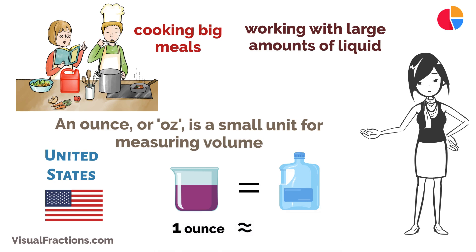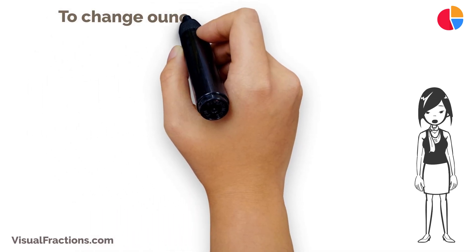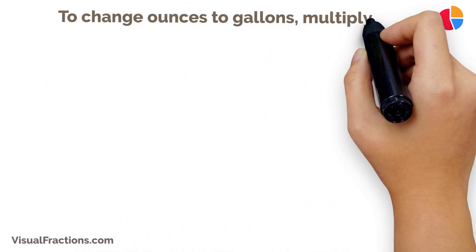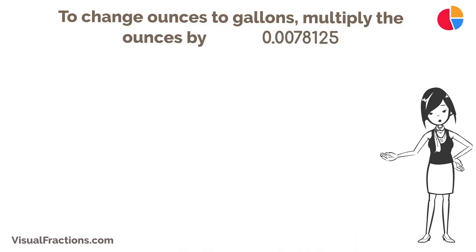Now the important part: one ounce equals 0.0078125 gallons. To change ounces to gallons, multiply the ounces by 0.0078125.